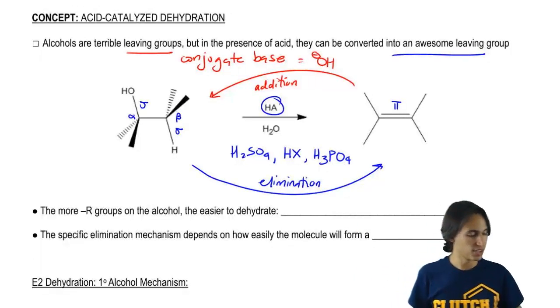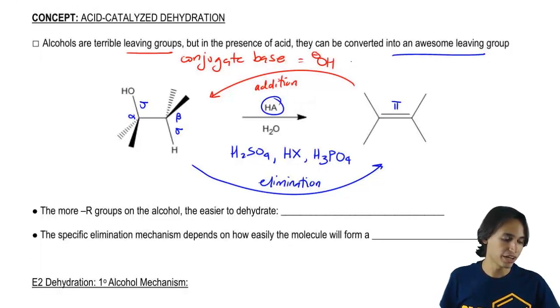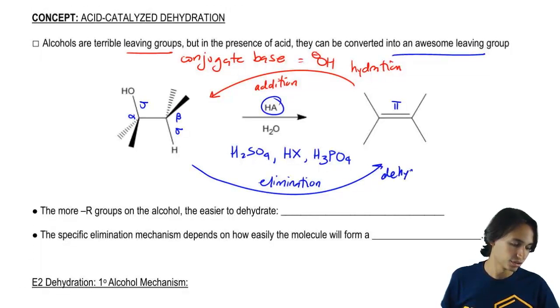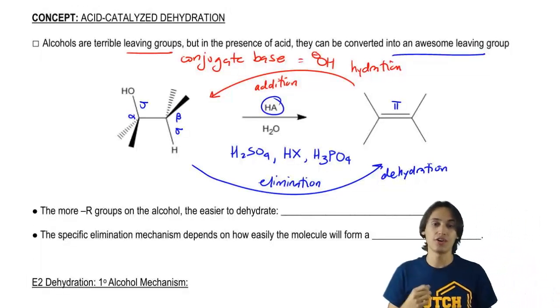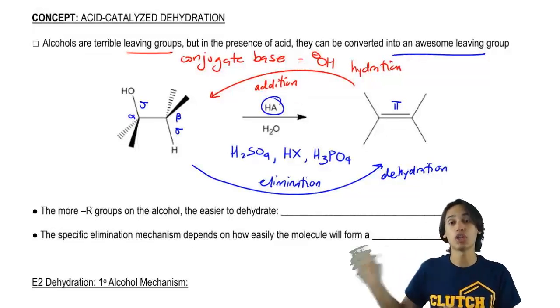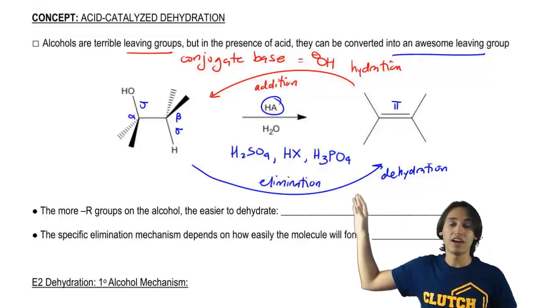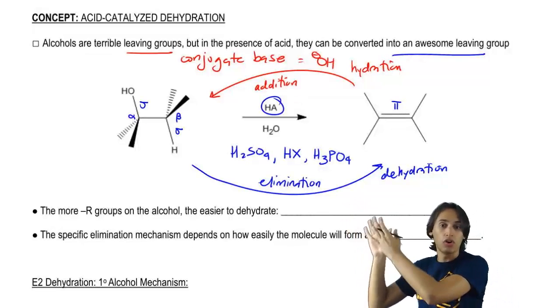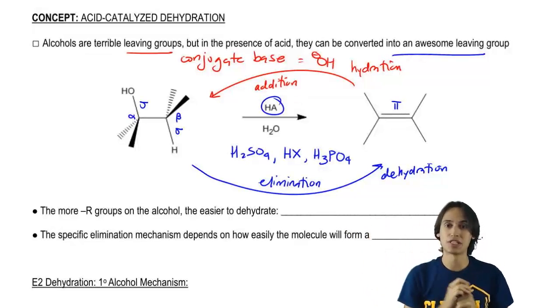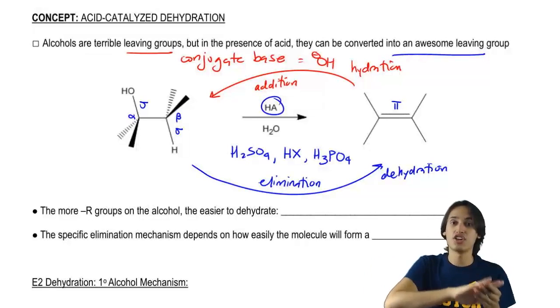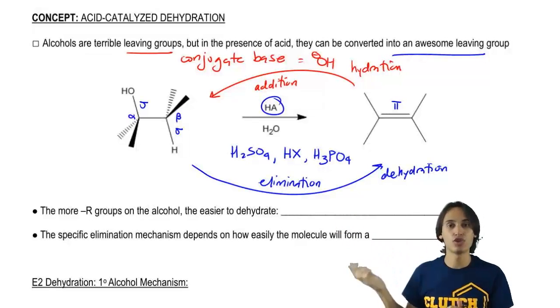So hopefully that makes sense. Basically the addition part is going to be the hydration. The elimination part is the dehydration. How do you know which one it is? How do you know if it's going to be a hydration or a dehydration? You just look at what you're starting with. So in this case, since I have my alcohol, I know that I'm starting with an alcohol and I'm going to try to eliminate it with an acid to become a double bond. However, if I was starting with a double bond and I used acid, then I could add water to it and that would become a hydration.